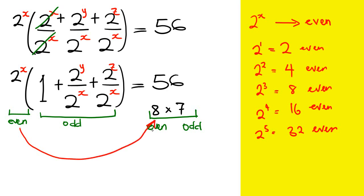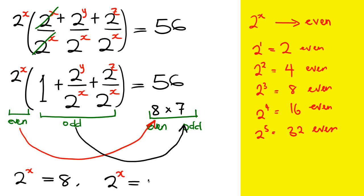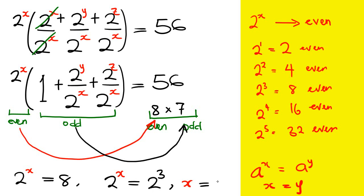The next thing is to equate even to even and odd to odd. So 2^x equals 8, which is the same as 2^x equals 2 raised by the power of 3. According to the index rule — if a raised by the power of x equals a raised by the power of y, then x equals y — they must have the same base. Therefore x equals 3.